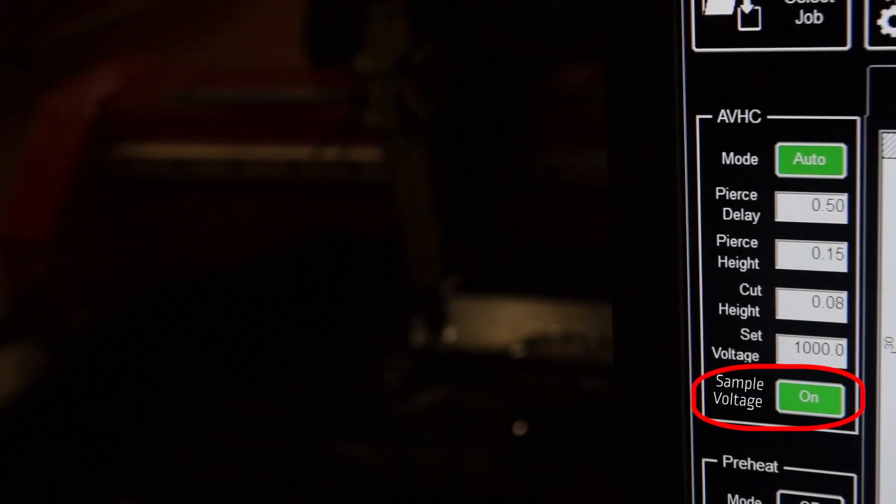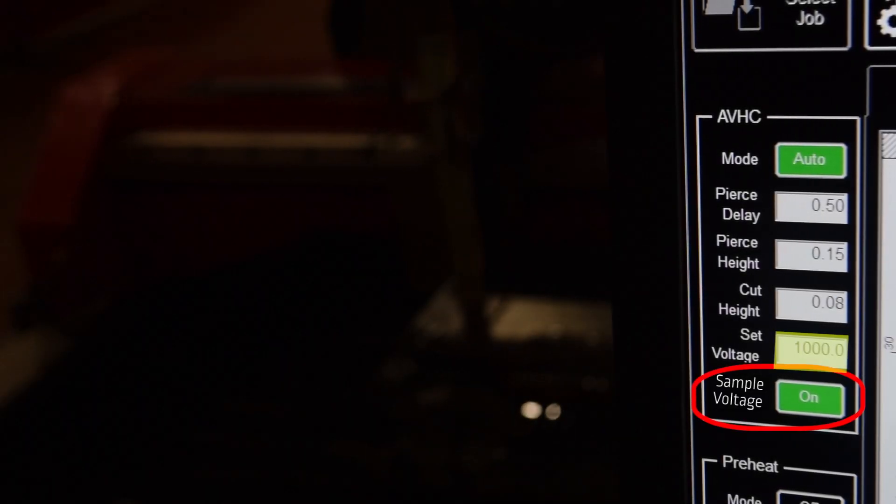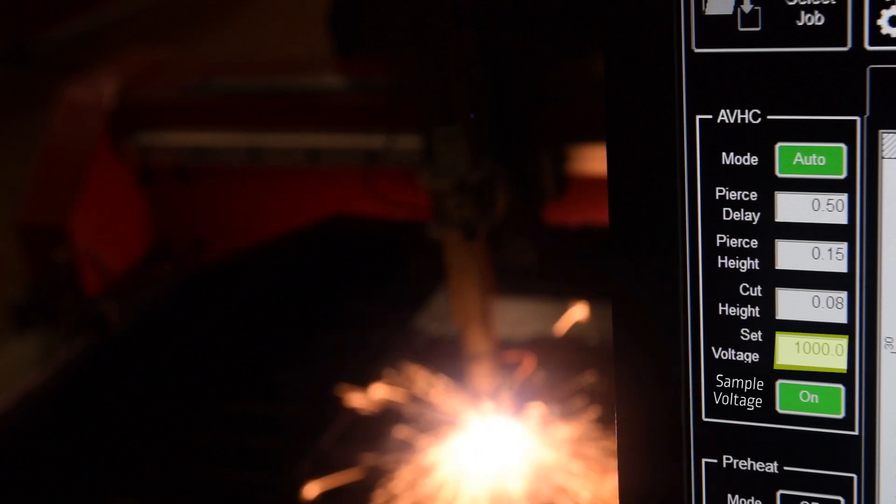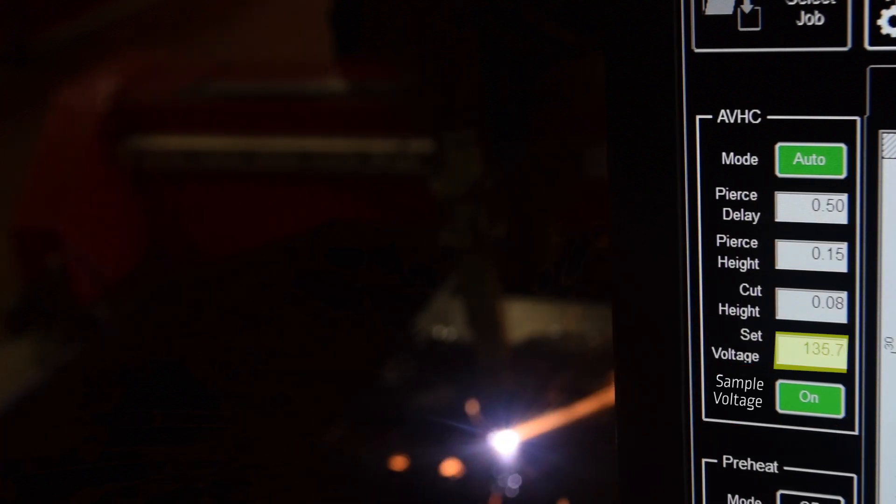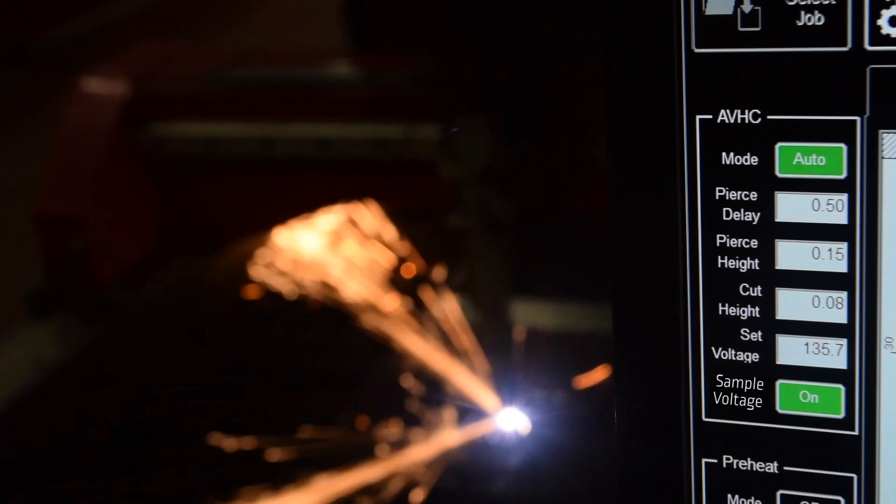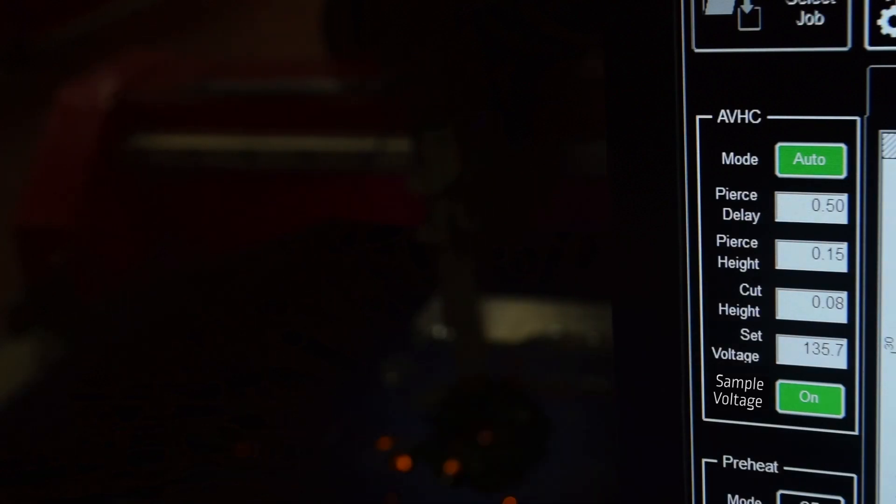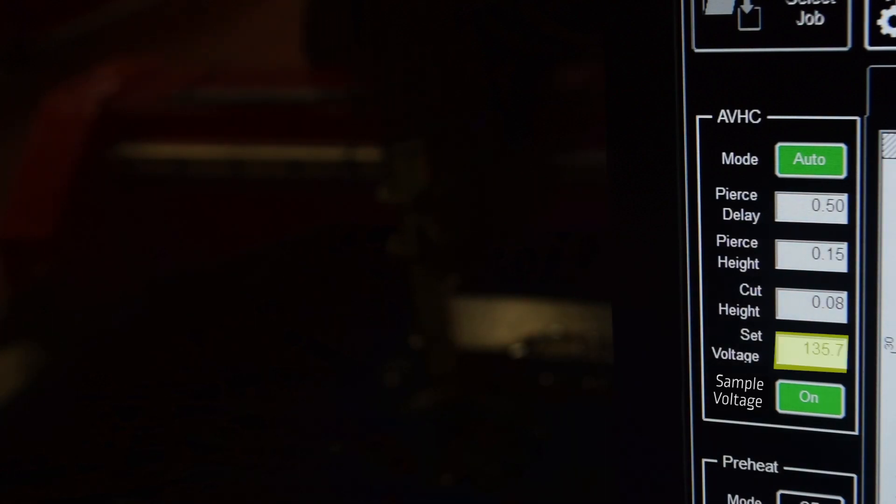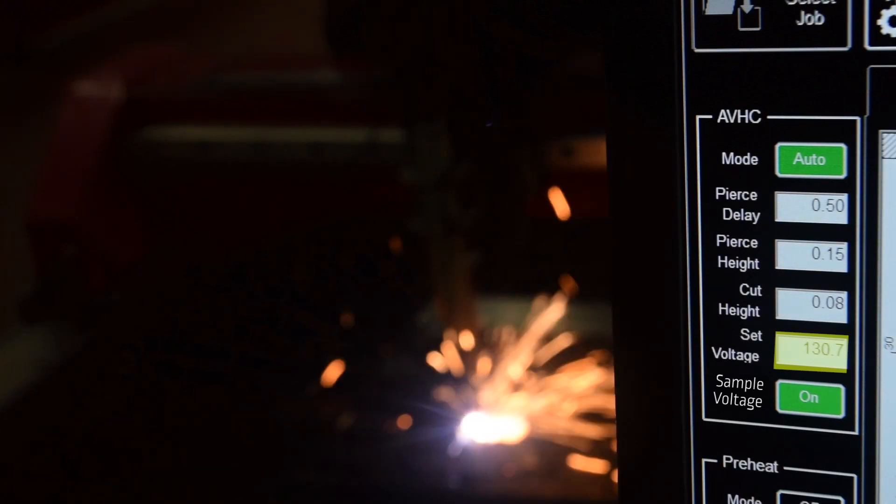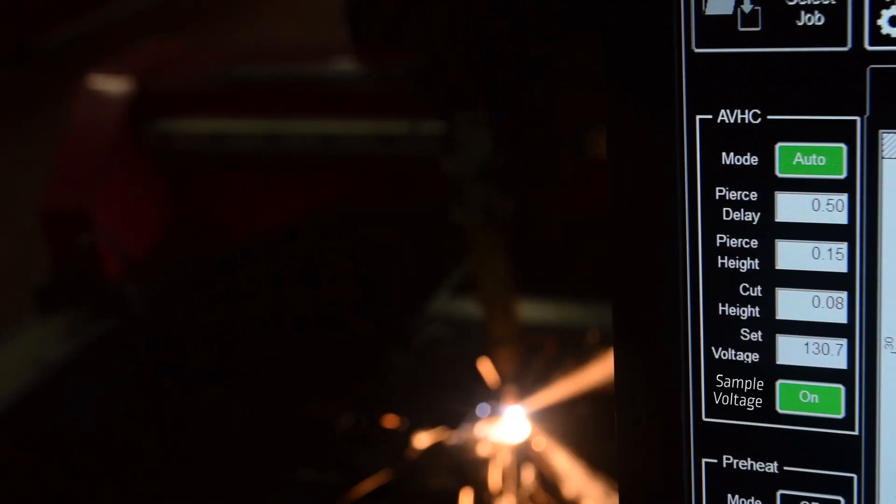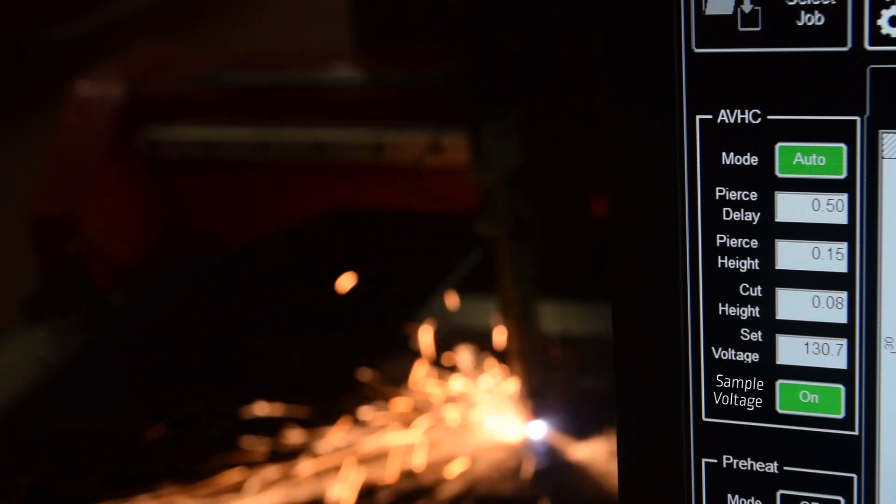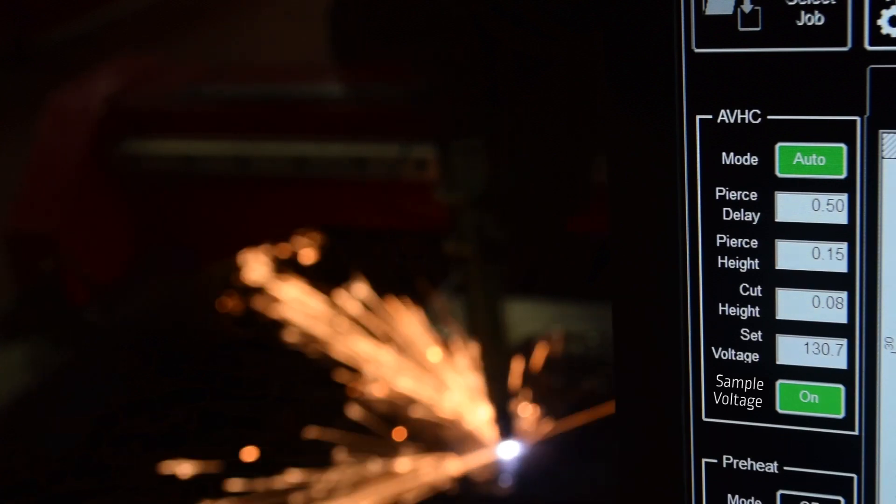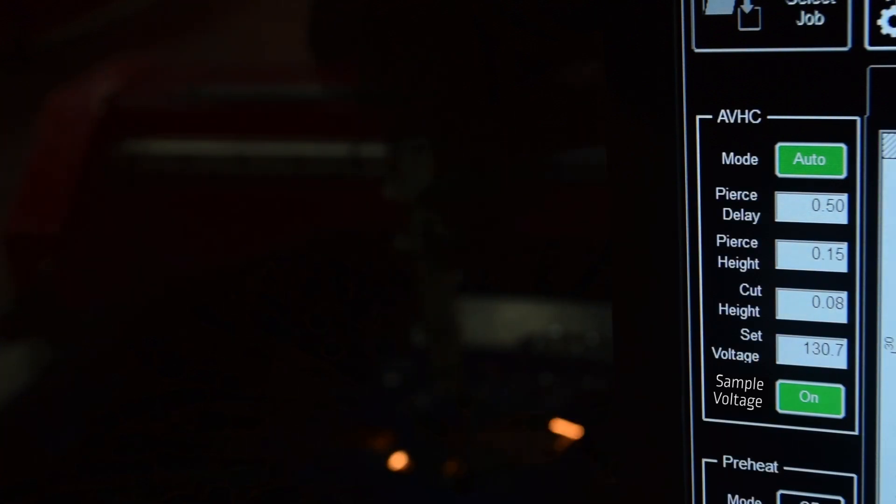Sampling the voltage lets the AcuMove controller acquire arc voltage readings for the first half inch of the cut. This is all done at your pre-programmed cut height of say 0.06 inches above the plate. In the half inch cutting distance, the controller computes the average arc voltage reading and then assigns it to the duration of the cut. The height control is then activated to maintain this new sampled arc voltage. The controller will re-sample the voltage with every new pierce.